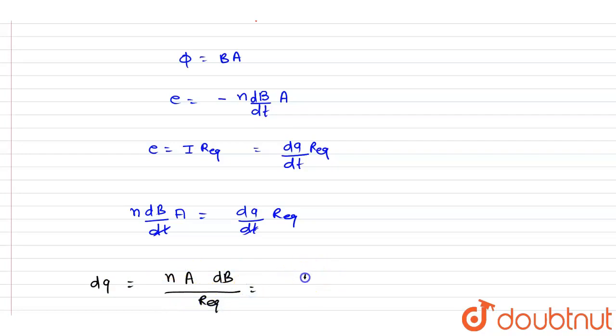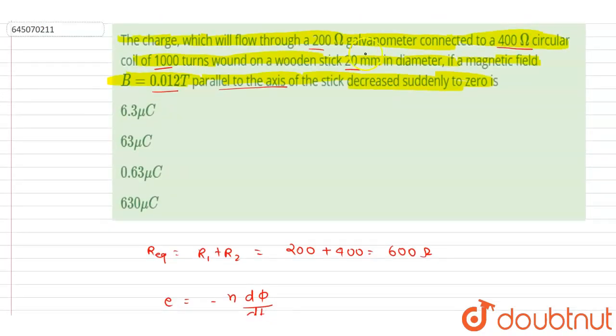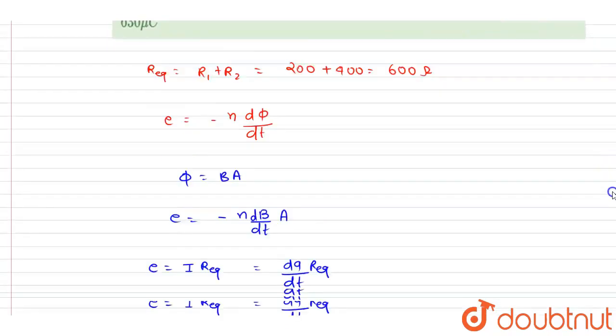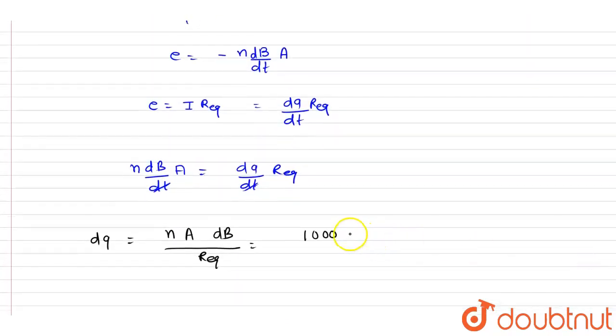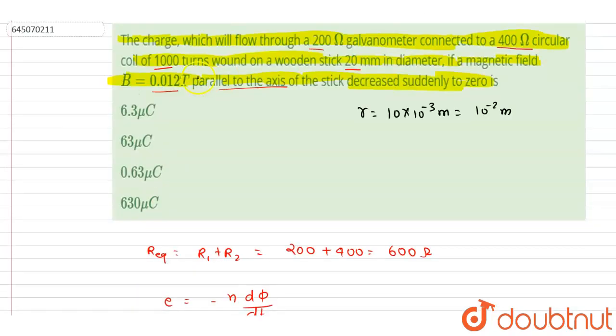Number of turns is given in the equation, it is thousand. Area you can get if you see the diameter is given. You can write down the radius will be 10 into 10 to the power minus 3 meter, that is 10 to the power minus 2 meter. So I will write down the area is pi r square. R we already got, it is 10 to the power minus 2, so I will write down 10 to the power minus 4. Change in magnetic field: magnetic field is changed from 0.012 to 0.